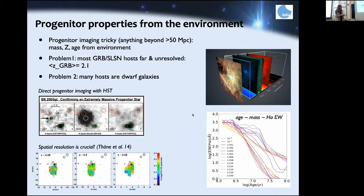From IFU data you can measure many emission lines in the warm gas of the galaxy excited by stars, and determine different properties: metallicity, dust extinction, star formation rate, and even get hints on the age of stellar populations through more sophisticated spectral modeling. This gives you maps — for example, of the metallicity distribution, where blue means low metallicity and red means near solar metallicity.